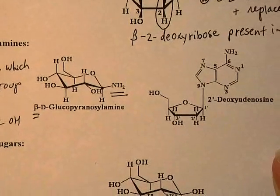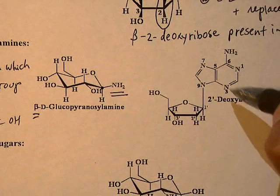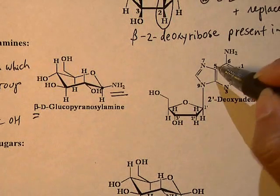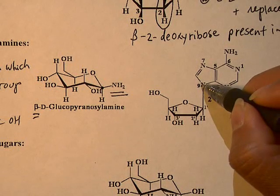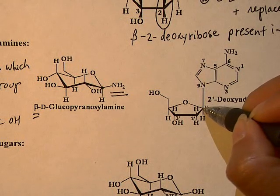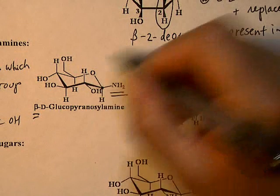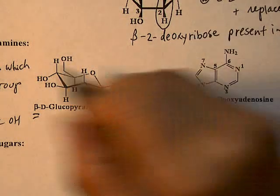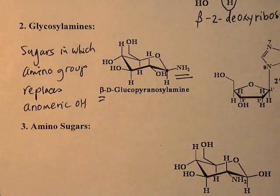The reason deoxyadenosine belongs to this class is because the nitrogen of the base is connected to the anomeric carbon in place of the OH. That's why it belongs to this class of sugars called glycosyl amines.